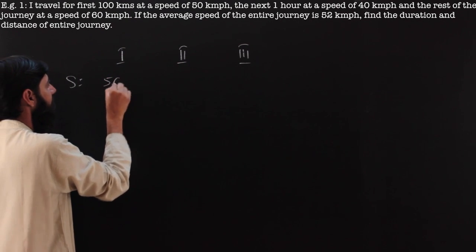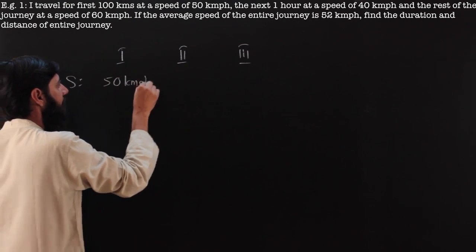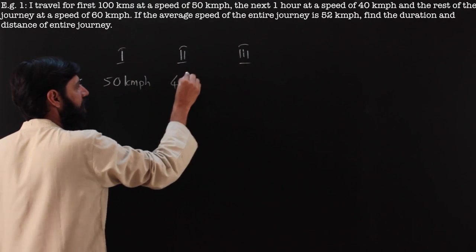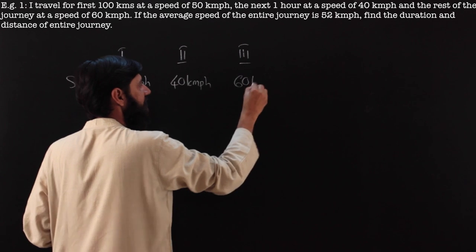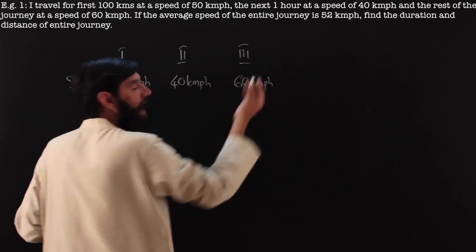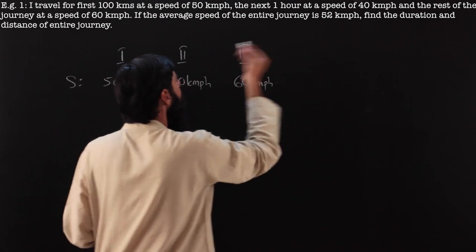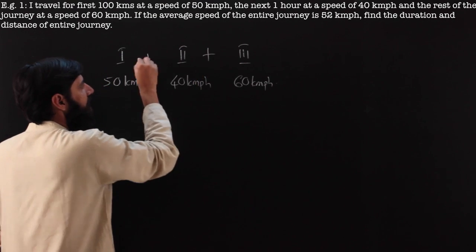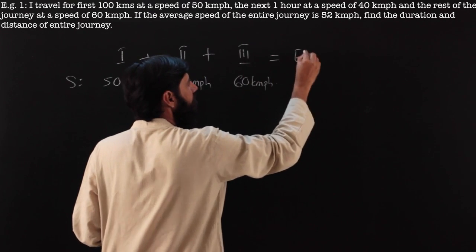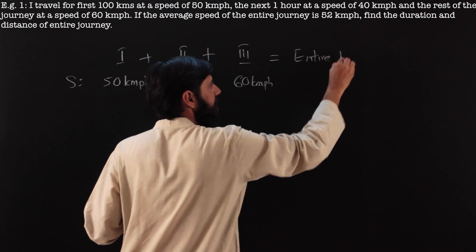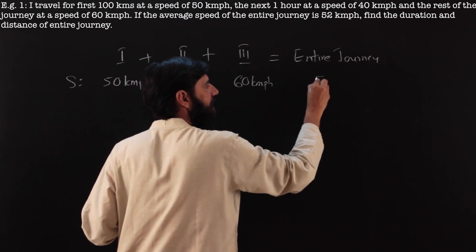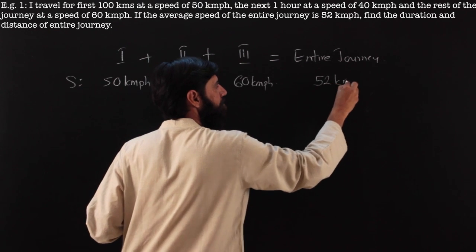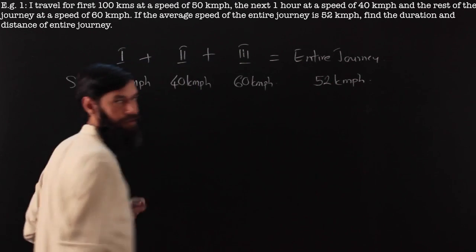The first stretch is covered at 50 km per hour, the next at 40 km per hour, and the last track at 60 km per hour. And it is also given the entire journey is going to be the summation of the three stretches. The speed for the entire journey is 52 km per hour.